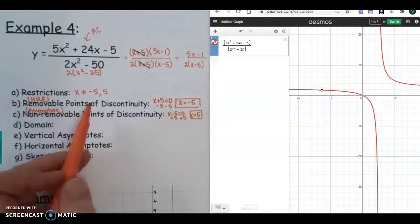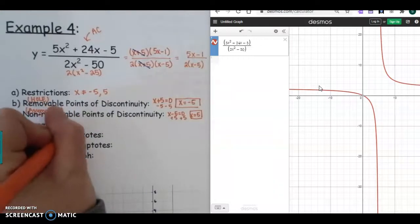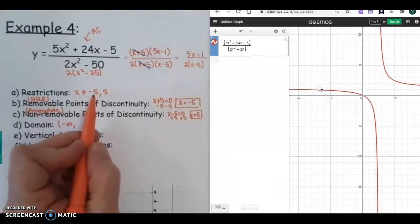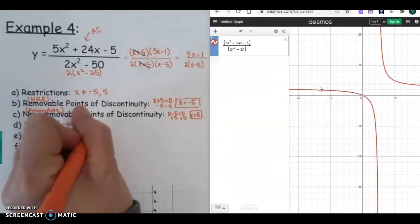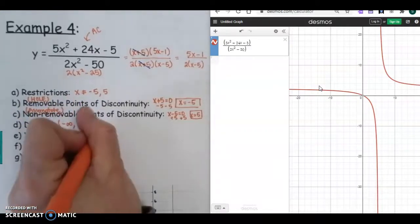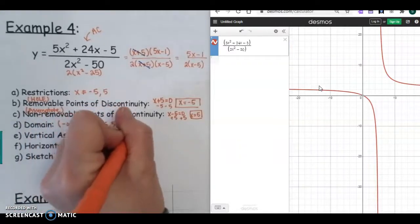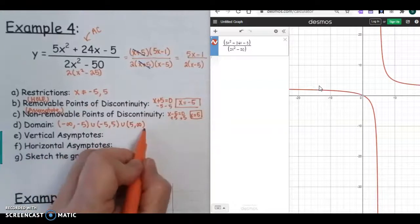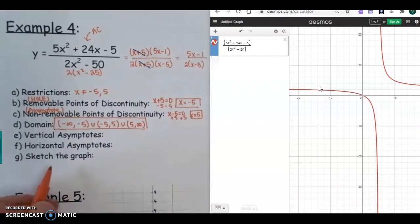So for our domain, we're going to use our restriction. If you need to do that number line, you can, but you're going to start at negative infinity. We're going to go up to negative 5, and negative 5 to positive 5, and 5 to infinity for your domain.